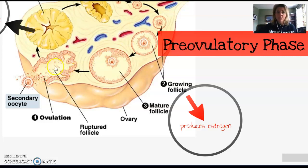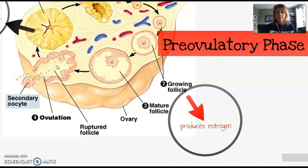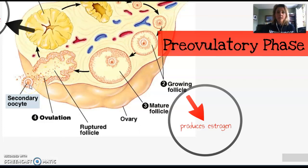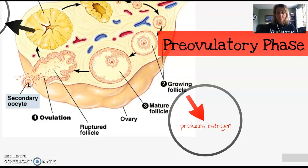At around day 14, ovulation will occur. As this follicle is growing, it's releasing more and more estrogen. Once estrogen hits its peak amount, it is going to stimulate the hypothalamus to release a burst of GnRH, which stimulates the anterior pituitary to release a burst of luteinizing hormone. It's that LH surge that's going to stimulate the rupture of this mature follicle and liberate our oocyte. The oocyte is now called a secondary oocyte because right before it is liberated, it finishes its first meiotic division and then goes partway into meiosis II.